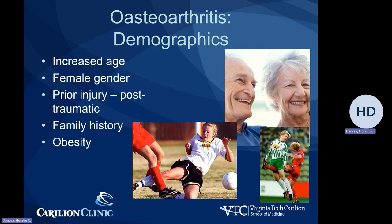Factors involved in osteoarthritis include increased age, female gender — with women being more prone to get arthritis earlier in life due to differences in water content and resistance of the cartilage — prior injury which may cause damage to the cartilage, family history which is thought to cause arthritic changes at a younger age, and obesity, which causes overload of certain joints. However, obesity is less involved in hand arthritis and mostly involved in arthritis of the lower extremity, hip and knees.